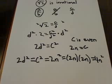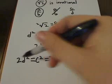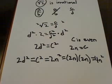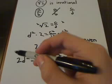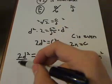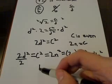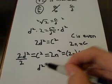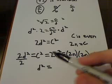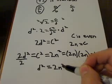So if we have 2d squared now equals 4n squared, what we can do is divide both of these by 2. What do we get by doing that? We get d squared equals 2n squared.